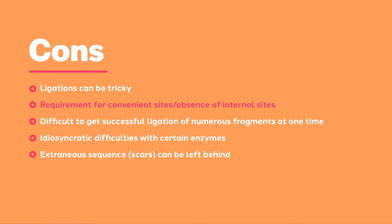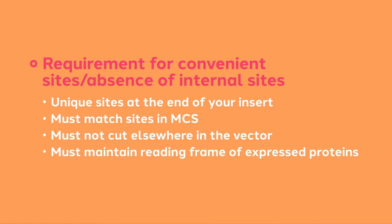The first potential problem with restriction cloning is the dependence on restriction sites. Any particular six-cutter restriction site will be found once every 4,000 base pairs on average. To successfully perform directional cloning, you need to find two restriction sites flanking your fragment of interest that will allow you to insert it into the vector in the correct orientation. Neither enzyme can cut anywhere else in the vector, and as you add additional fragments of DNA, you are adding more sites.